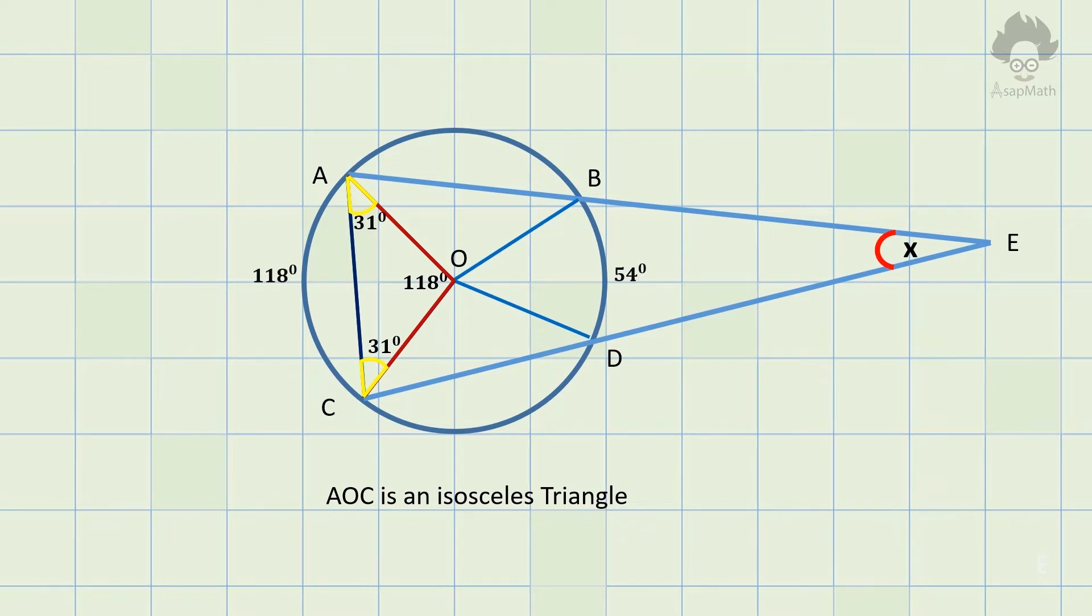Next step is to join points B and D. It is also an isosceles triangle. And therefore, angle OBD equals angle ODB. As angle DOB is 54 degrees, we can find the remaining two angles. So, both angles are 63 degrees.